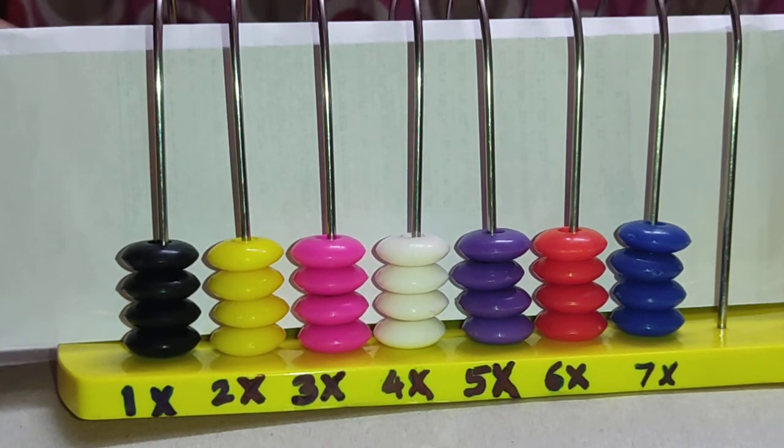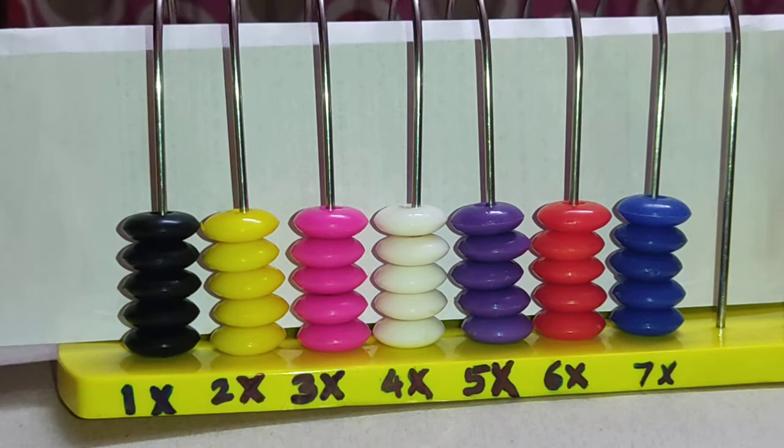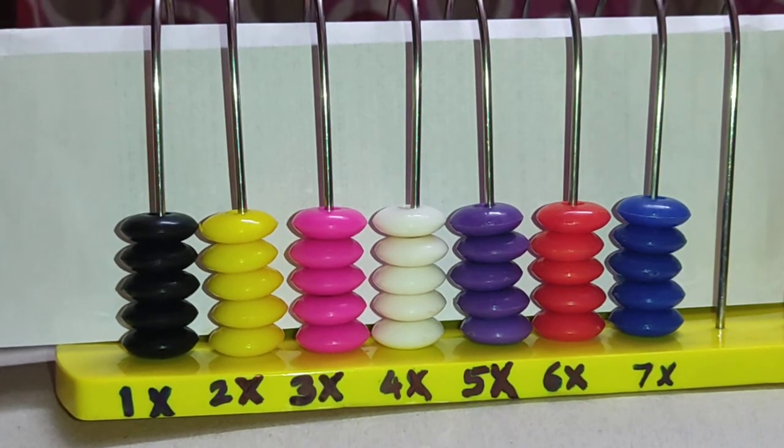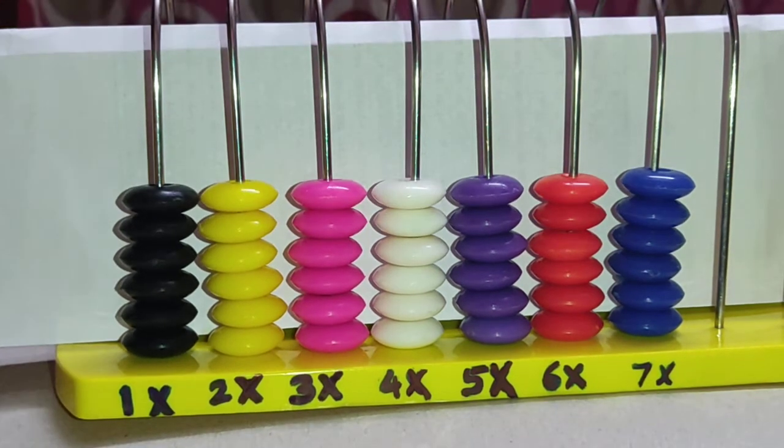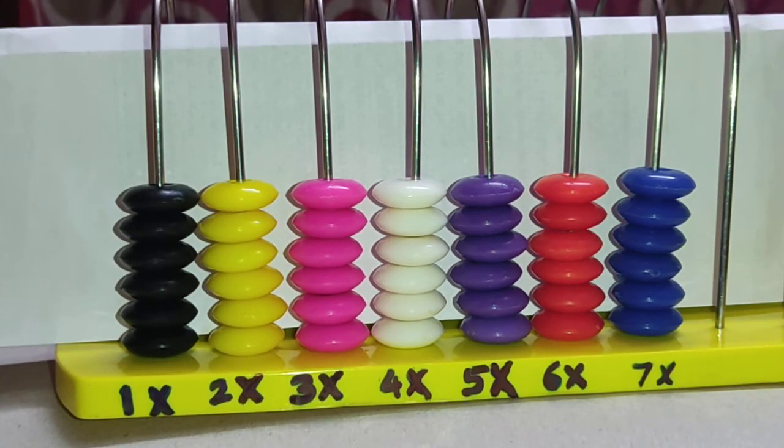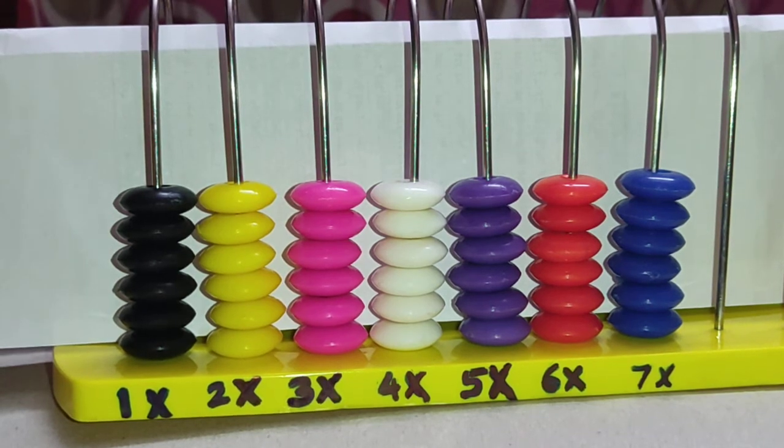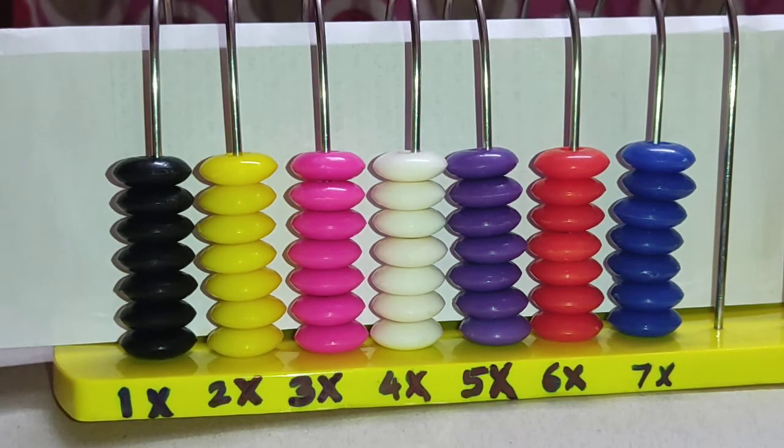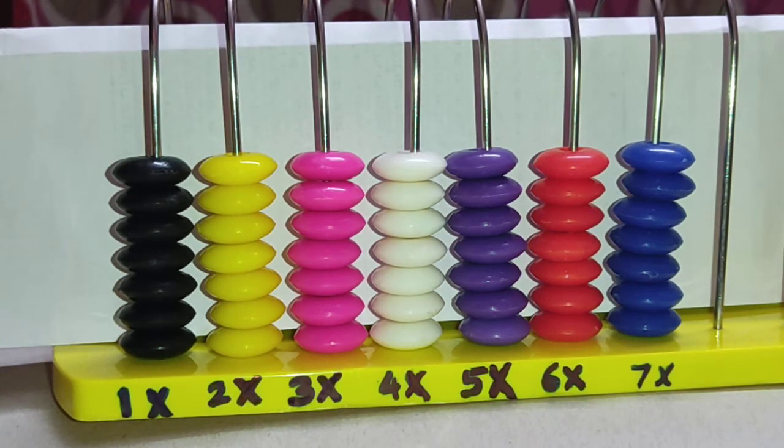7 times 5 is equal to 35. 7 times 6 is equal to 42. 7 times 7 is equal to 49.